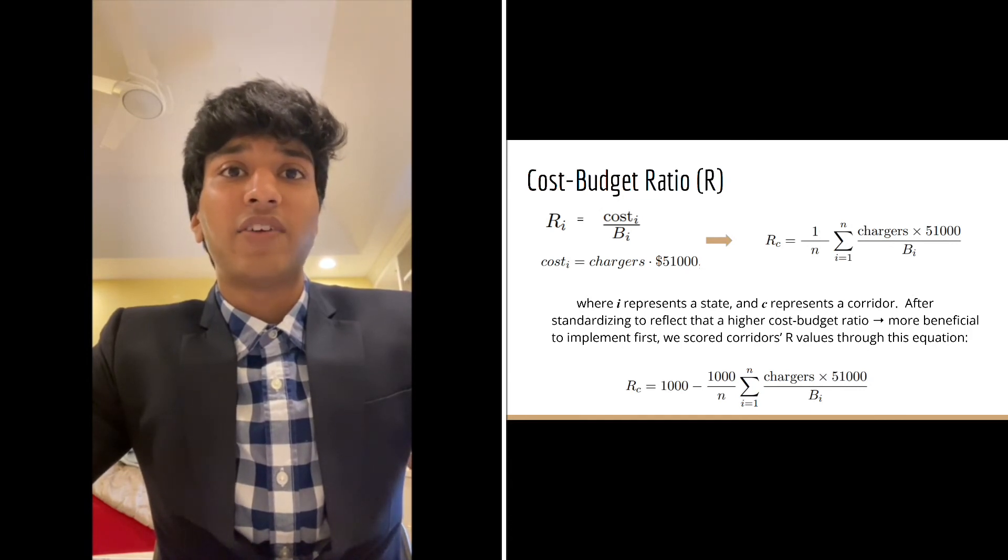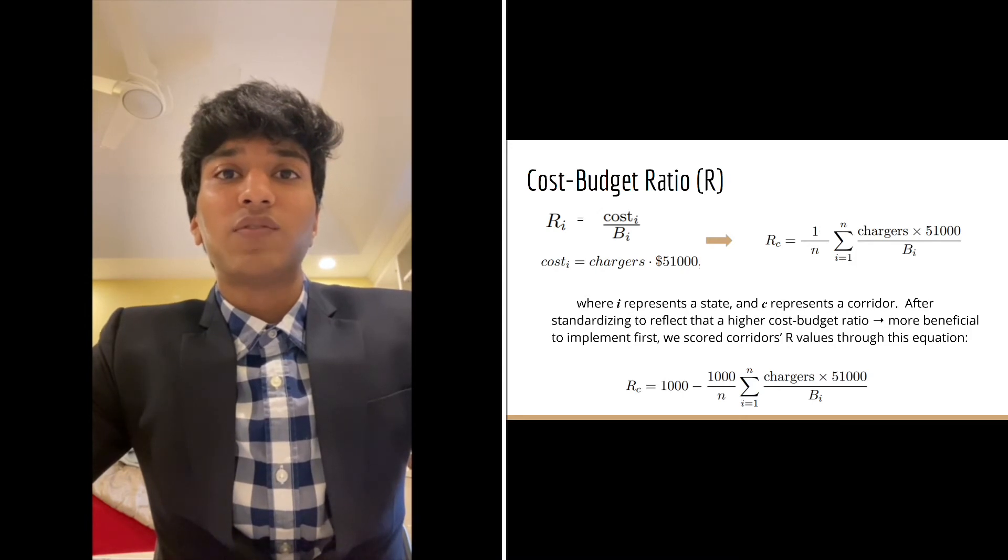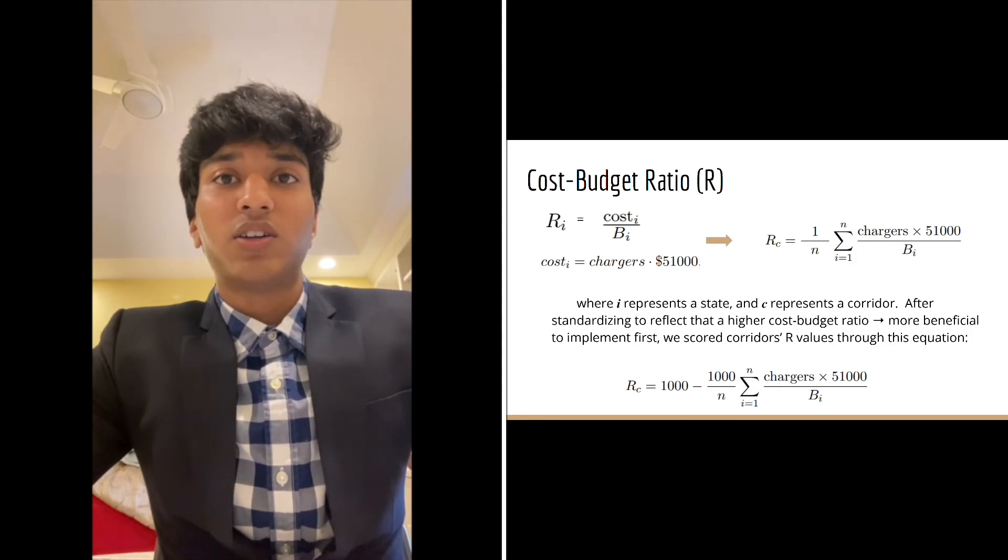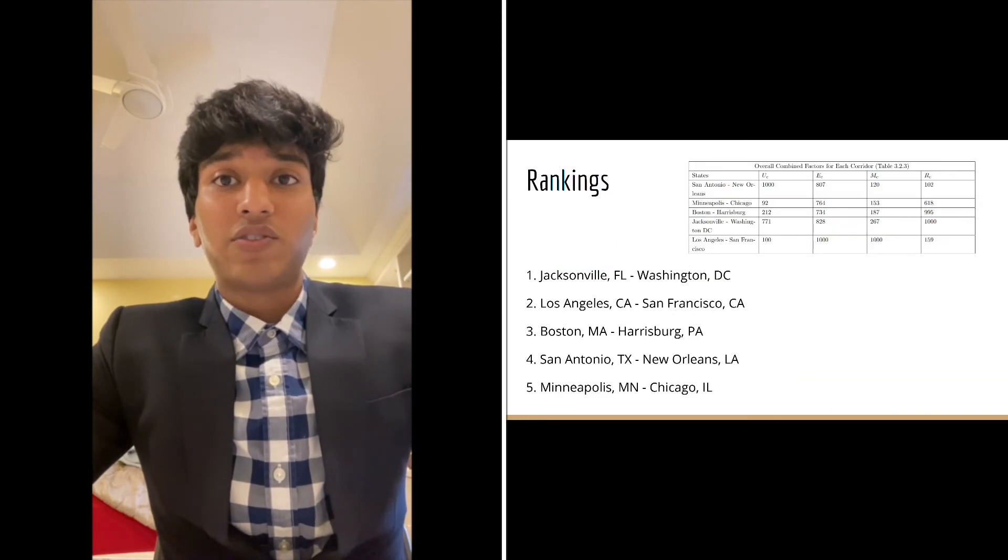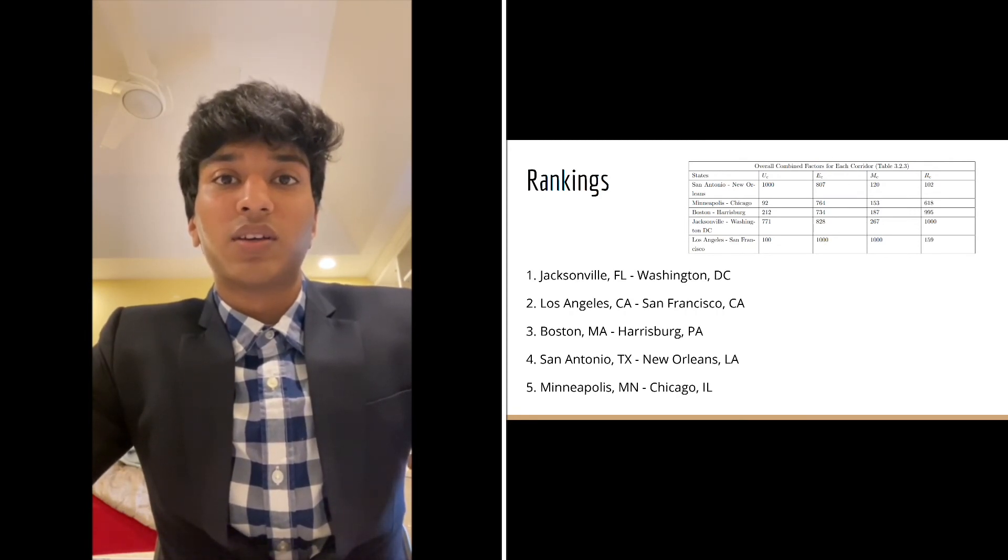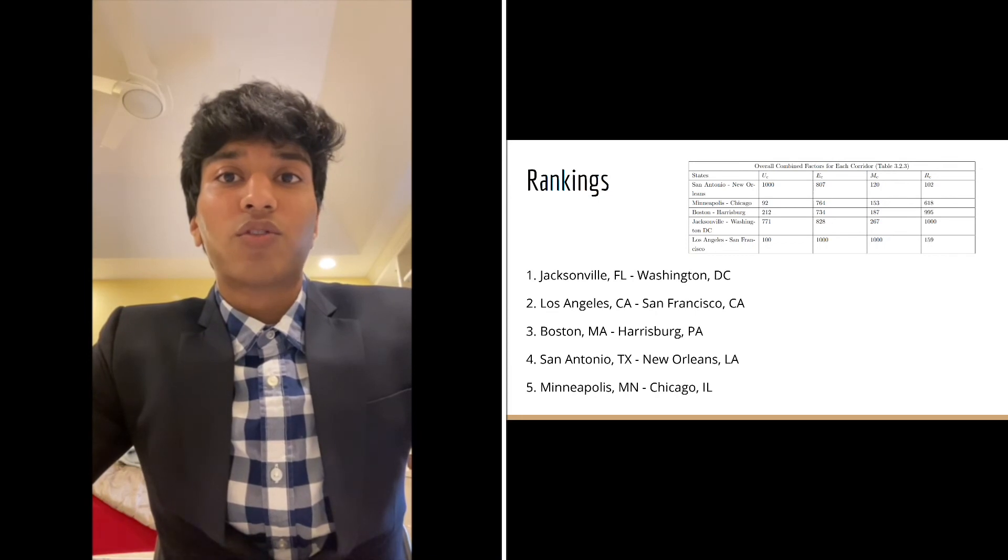As seen in the factors equations, our rankings are most sensitive to the state's budget and the cumulative distance traveled by cars and trucks through each corridor. This is understandable because shifting to electric trucking would be most reasonable when it is fiscally achievable and widely used. After standardizing each factor from one to thousand, we summed up for each corridor's respective scores to determine the ranking. We concluded that the corridor from Jacksonville, Florida to Washington, D.C. should be targeted first for implementation as it had the highest overall score.